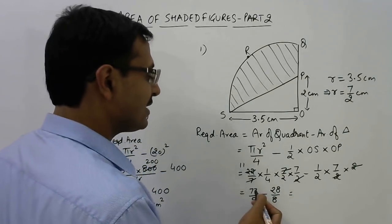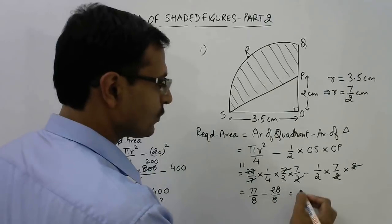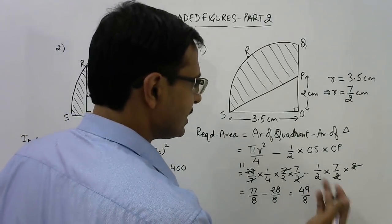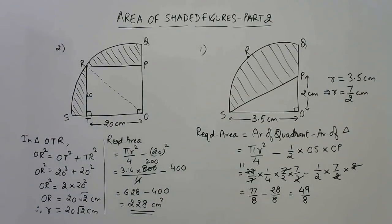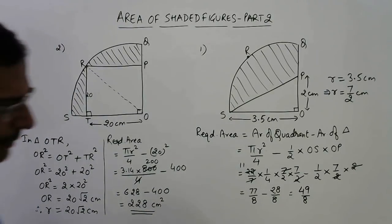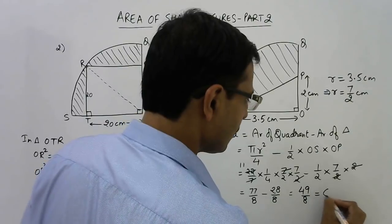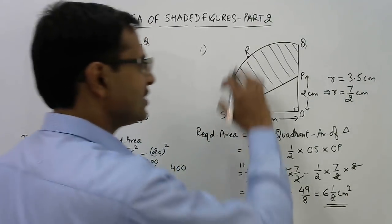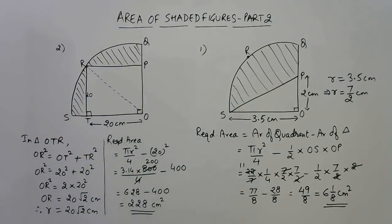Subtracting is very easy now. 77 minus 28 is 49/8 centimeter square, or you can convert it into a mixed fraction also: 6 1/8 centimeter square. That is the area which is shaded here, the area of the quadrant which is not included in the triangle.